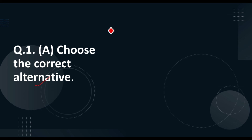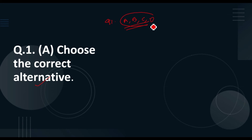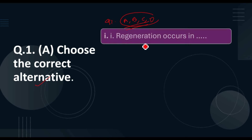Let us move to question number one: 'Choose the correct alternative.' In the board examination, each question has four options: A, B, C, D. Many times students write the entire statement in fill-in-the-blank form, but the board clearly mentions you have to write only the answer option. Here are some questions and their options showing how to write correctly in your final board examination.